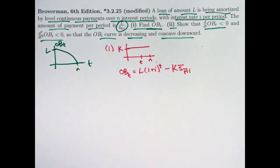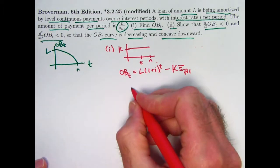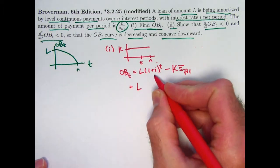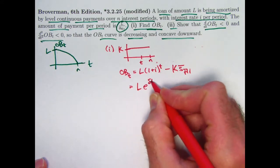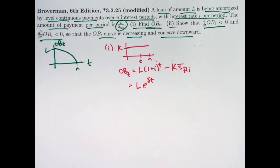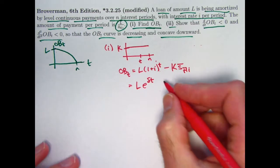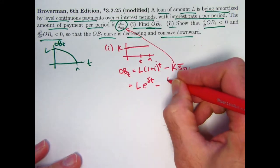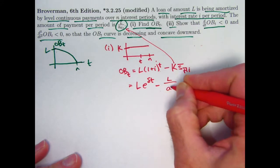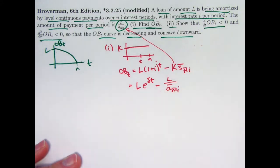That's the retrospective formula for the outstanding balance at time t. It's one formula for OB(t), but not in ideal form for differentiation yet. We can write (1+i)^t as e^(δt), where δ is the force of interest — the natural log of (1+i) when i is constant. We can also replace k with what it equals: L over a-bar sub N at interest rate i.